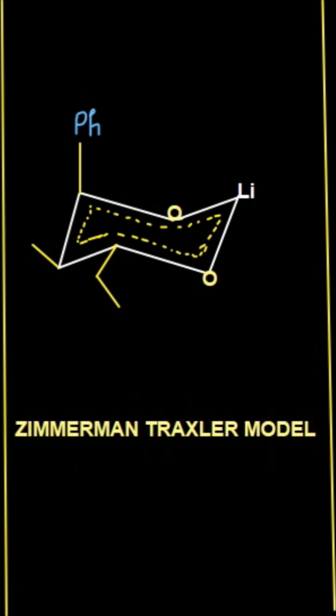The Zimmerman Traxler model assumes that whenever the aldol condensation takes place between the enolate ion, lithium enolate, and any carbonyl compound, a six-membered ring is formed. This is not exactly the transition state but a pseudo transition state according to the Zimmerman Traxler model.